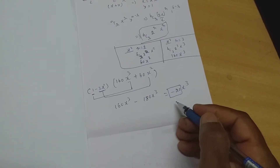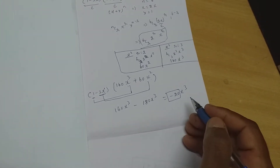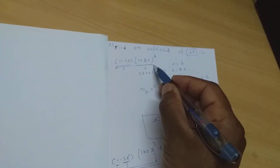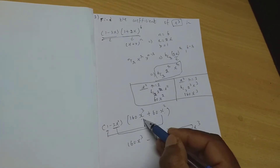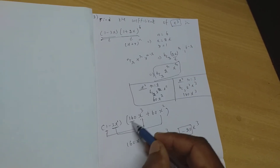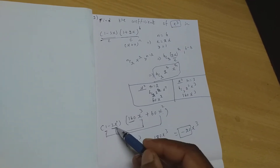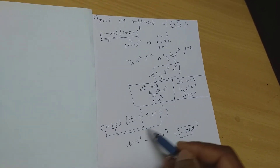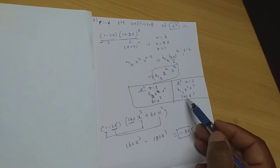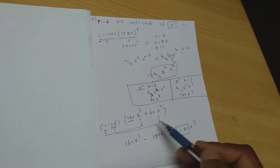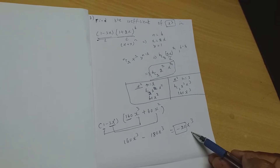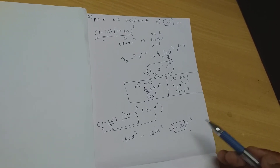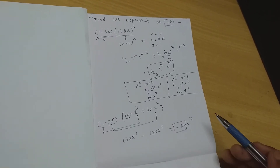So the coefficient of x³ is −20. Whenever given in this form, you need to decide what 1 should be multiplied with to get x³, find that coefficient, place it, multiply, and finally get the answer. This is another type of finding the coefficient.